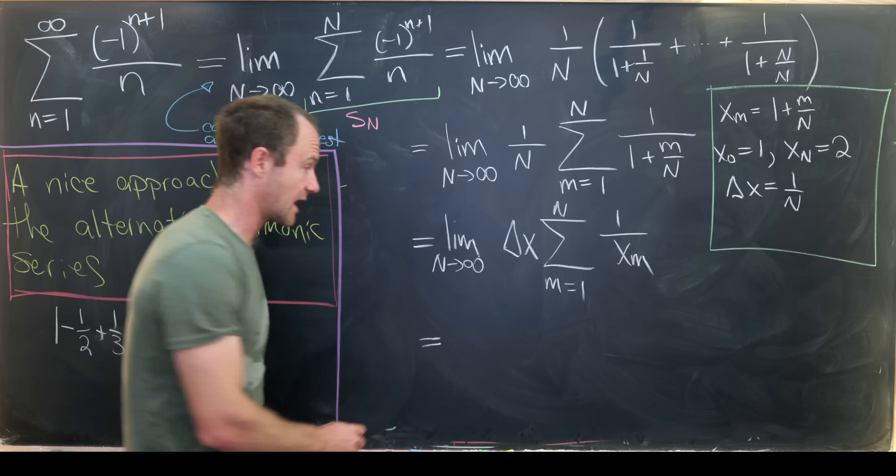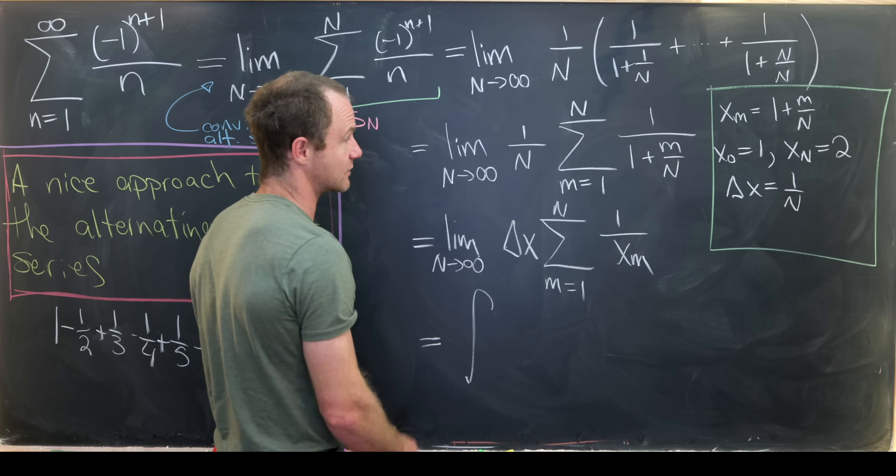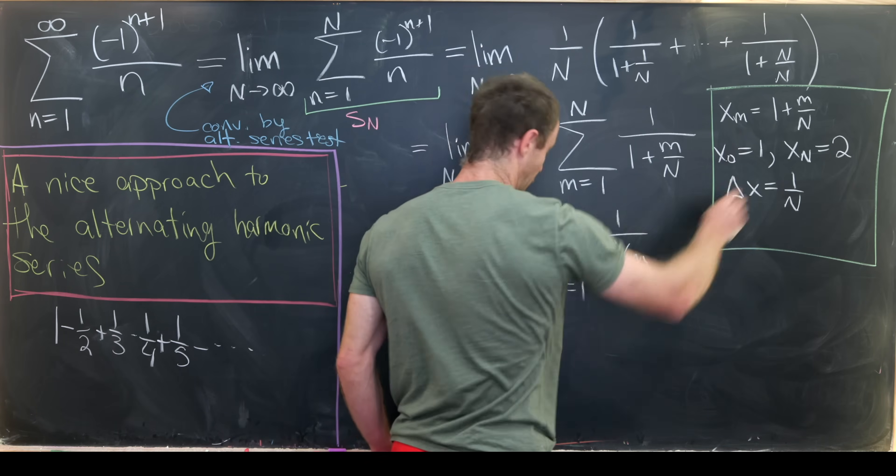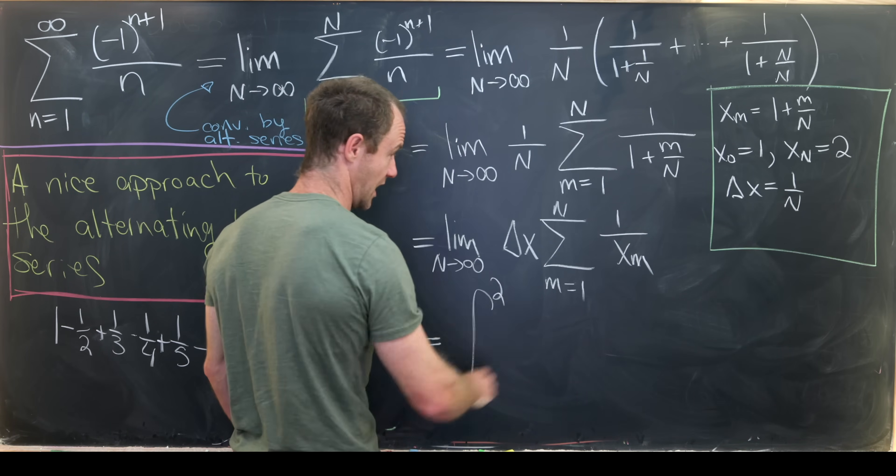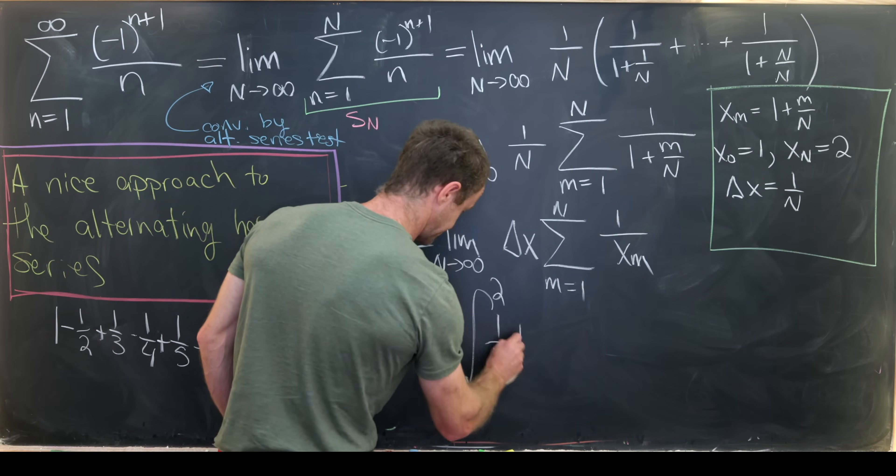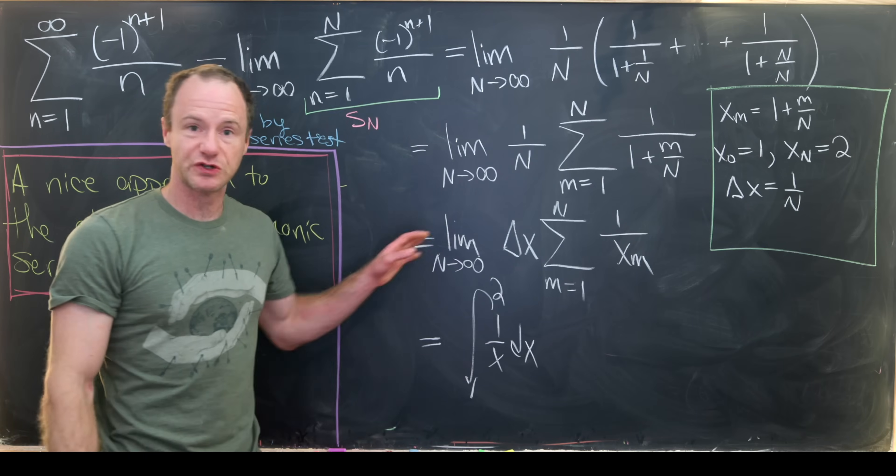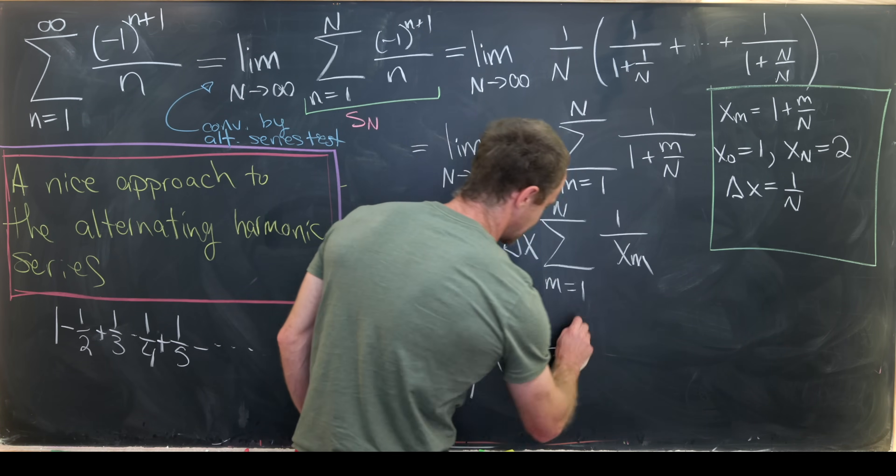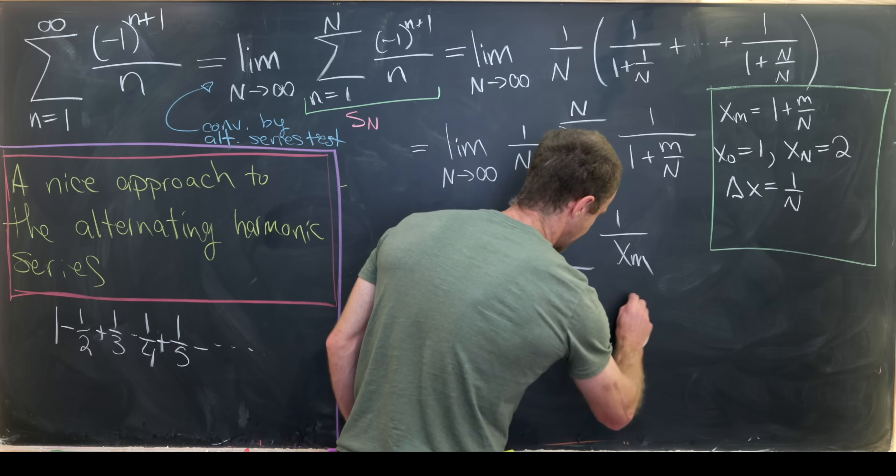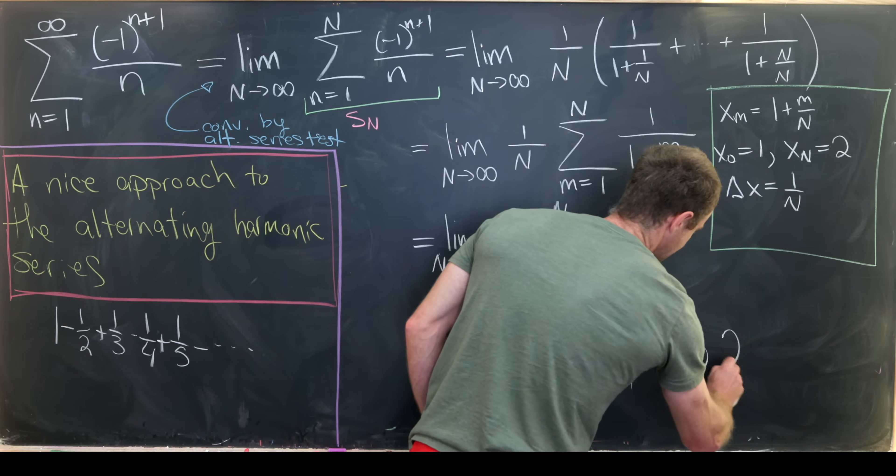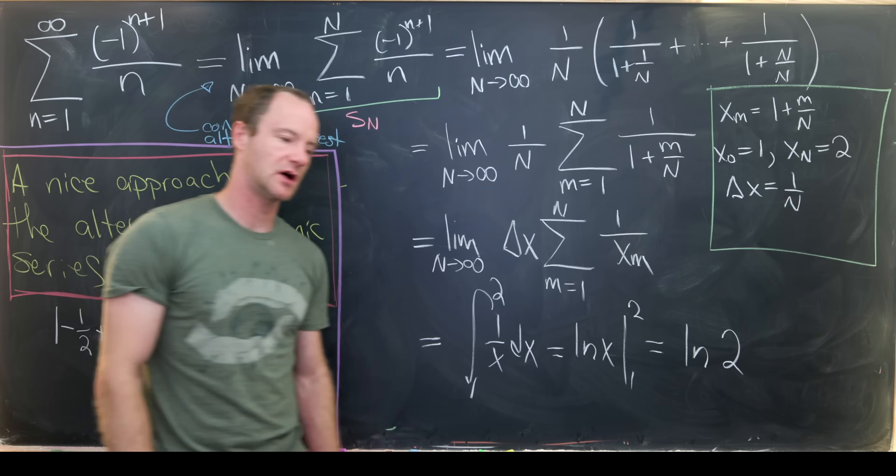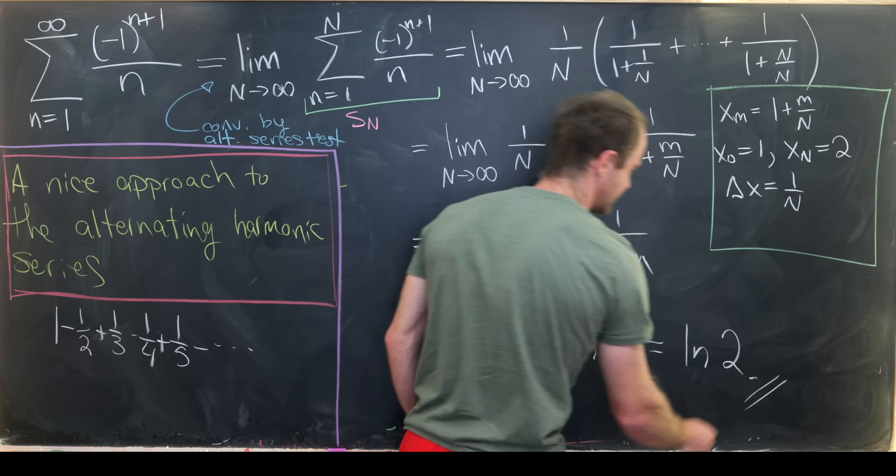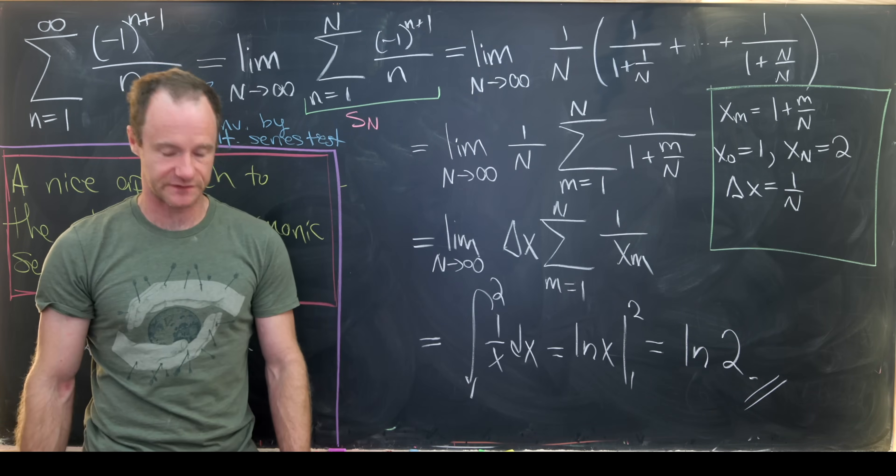But now that we see that, that looks a lot like the integral from X_0 up to X_N. In other words, 1 to 2 of 1/X dX, which we can evaluate with the fundamental theorem of calculus. So that's going to give us the natural log of X evaluated from 1 to 2. That gives me the natural log of 2 minus the natural log of 1. But the natural log of 1 is 0. So my final answer is the natural log of 2.